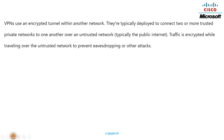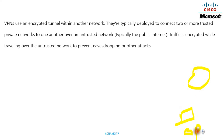VPNs use an encrypted tunnel. For example, this is your cloud and this is your on-premises infrastructure. If you make a connectivity by VPN, they will use an encrypted channel — they will create a tunnel here and that will be encrypted. They are typically deployed to connect two or more trusted private networks to one another over an untrusted network, typically the public internet.